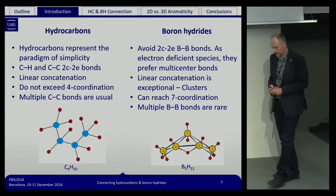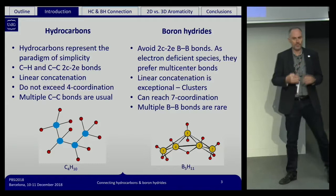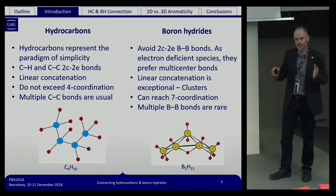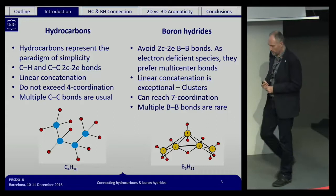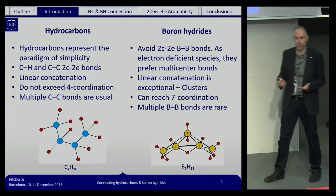When we move to boron hydrides, things get more complicated because boron is electron deficient. Boron does not like to have two-center two-electron bonds; it prefers multi-center bonding. Linear concatenation is not usual — they make clusters in general — and they can reach coordination numbers up to seven. In addition, multiple boron-boron bonds are not usual.